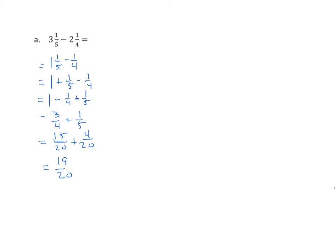Let's look at approach 2. The other method is changing my mixed numbers into improper fractions. Let's write the original expression: 3 and 1 fifth minus 2 and 1 fourth. Like the previous, we're going to subtract the wholes first. So 3 minus 2 is 1 and 1 fifth minus 1 fourth. Now we'll convert 1 and 1 fifth to an improper fraction, so we get 6 fifths minus 1 fourth.